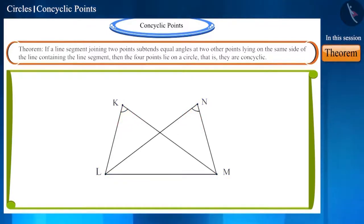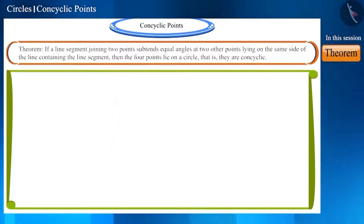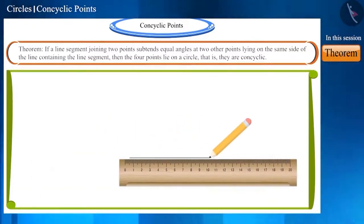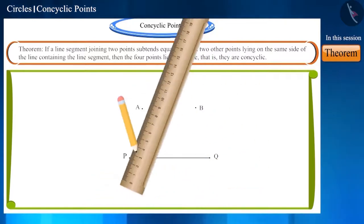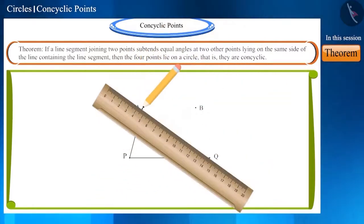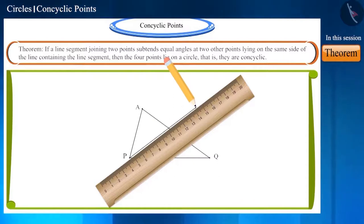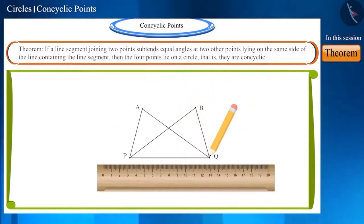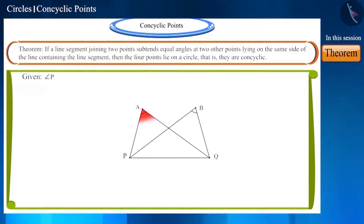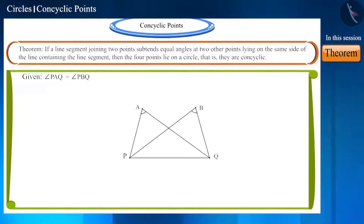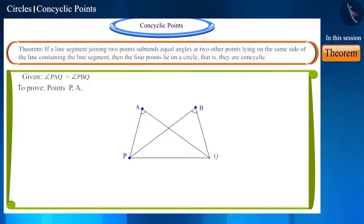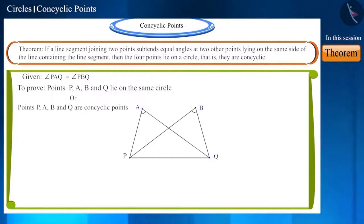Let's check the correctness of this theorem. Draw a line segment PQ which subtends equal angles at points A and B, meaning angle PAQ and angle PBQ are equal. We have to prove that the four points P, A, B, and Q lie on the same circle — that is, these points are concyclic.